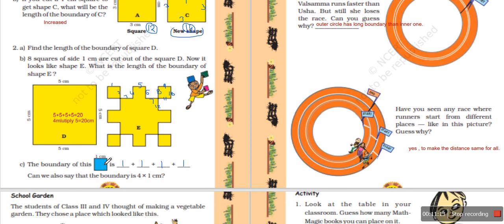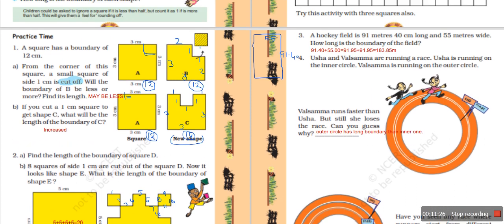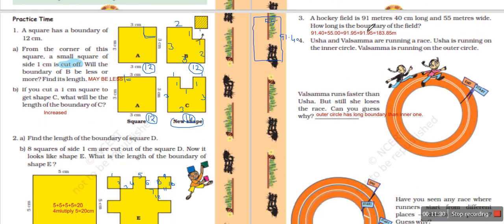Now find the boundary wall of this shape. The length is 91.40 cm — add all four sides and you will get the boundary wall of the hockey field.